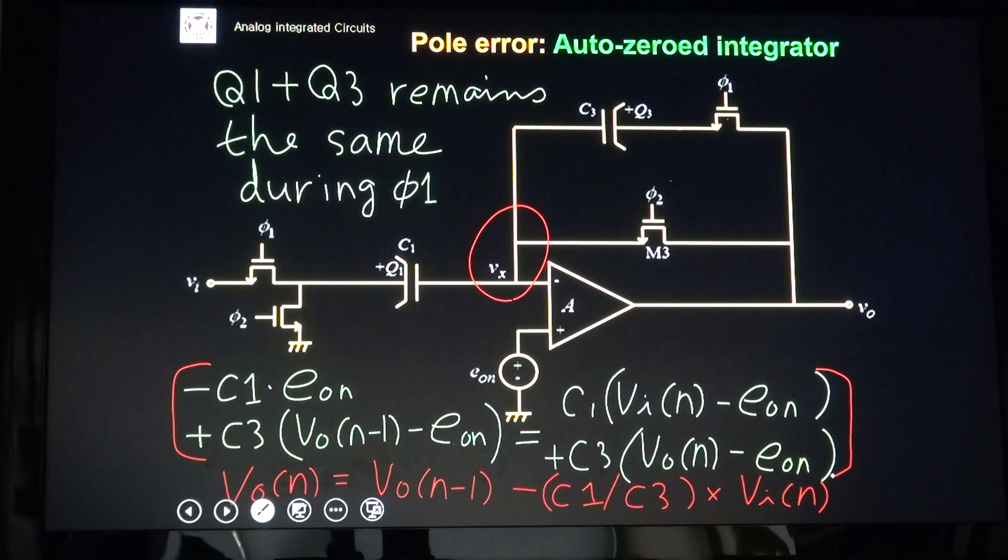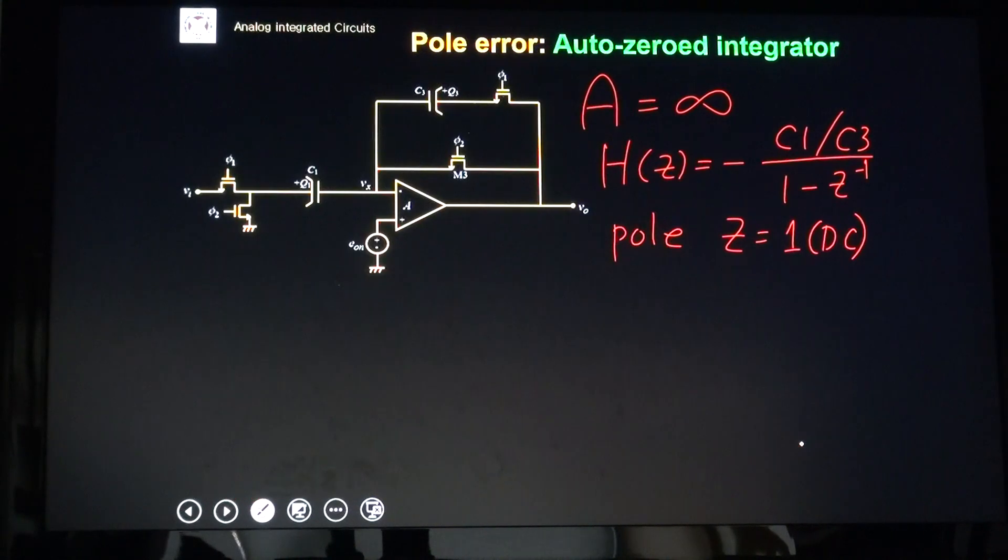Here, we can see all those input offset terms disappear, right? They cancelled. So, this output voltage does not contain any offset term. VON is VO(n-1). So, my pole is perfect. I have a perfect pole, Z equal one. That's for A equal infinite.